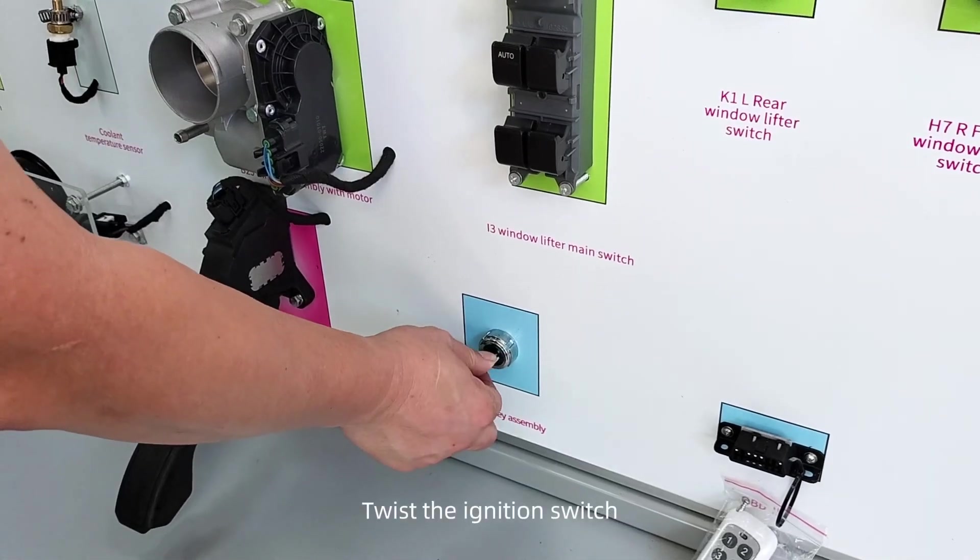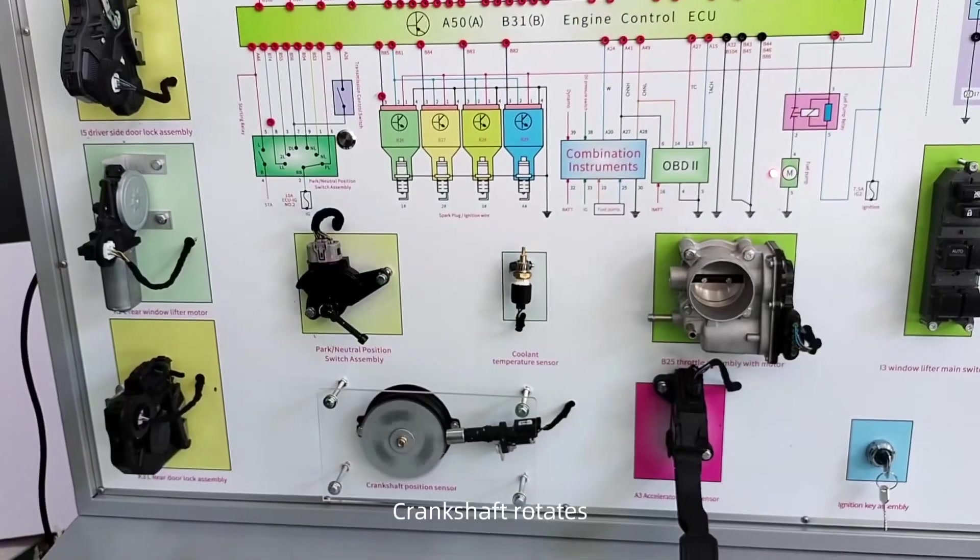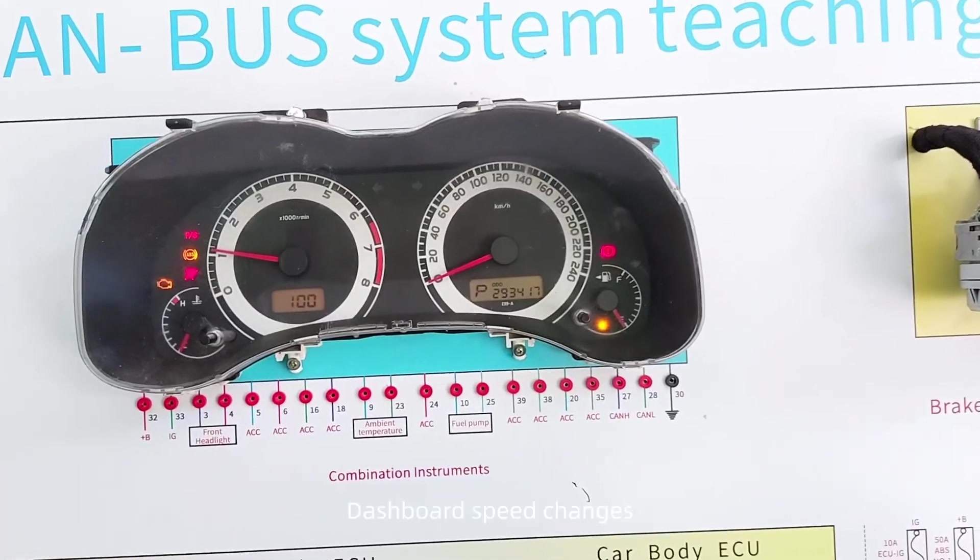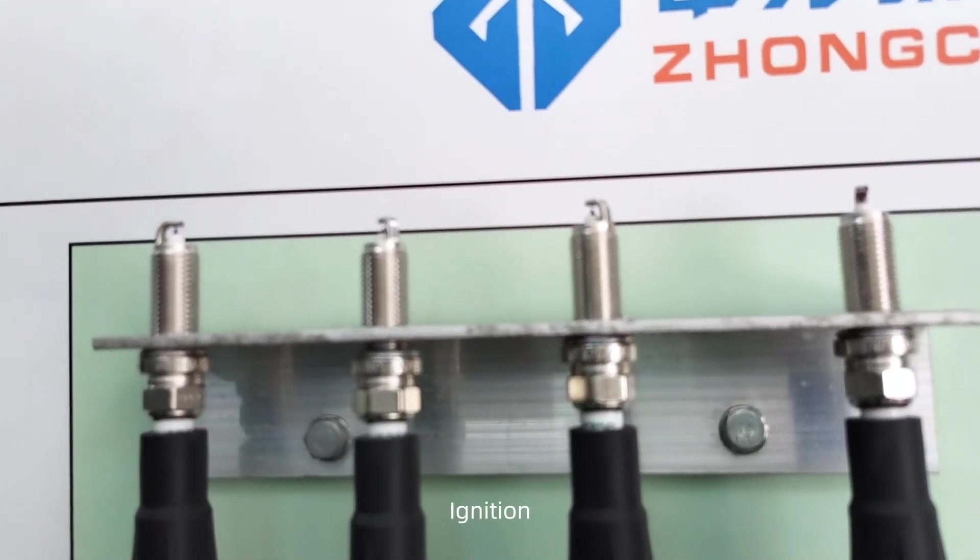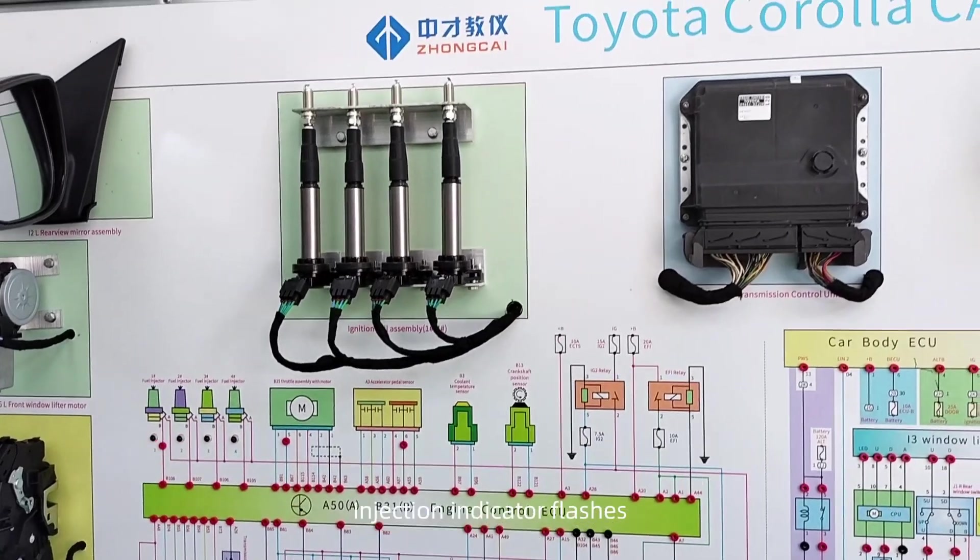Twist the ignition switch. Adjust the speed. Crankshaft rotates. Dashboard speed changes. Fuel pump indicator lights up. Ignition. Injection indicator flashes.